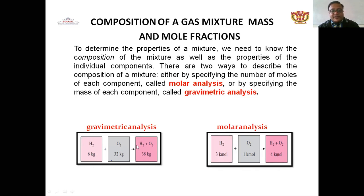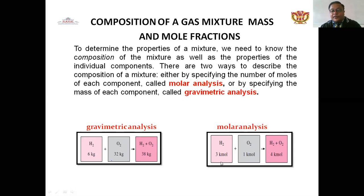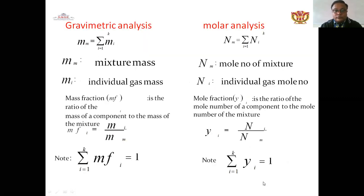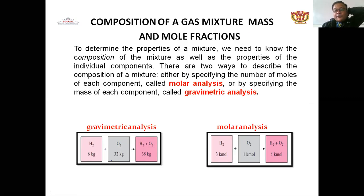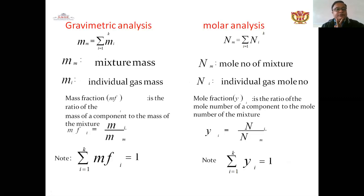For example, if hydrogen has a mass of 6 kg and oxygen has a mass of 32 kg, then the total from gravimetric analysis is hydrogen plus oxygen equal to 38 kg. The total gravimetric analysis gives 38 kg because hydrogen is 6 kg and oxygen is 32 kg.